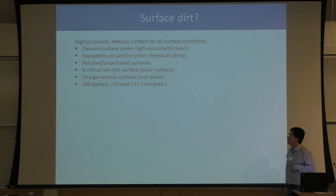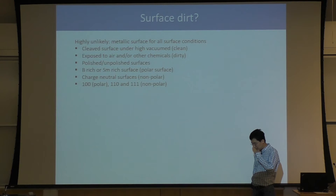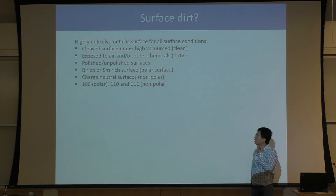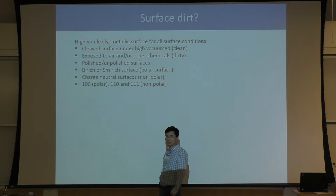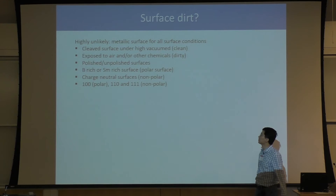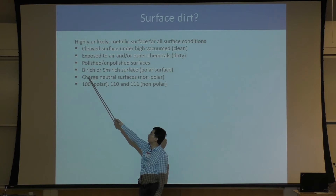In the last couple of minutes, let's think carefully: can this surface conductivity come from something else? For example, from some dirt on the surface or some accidental surface state? This is very unlikely. In the last several decades, people studied many different surface conditions — very clean surfaces in high vacuum freshly cleaved, very dirty surfaces exposed to air and other chemicals, polished and unpolished, samarium-rich, boron-rich, charged, neutral, 100, 110, 111 — and for all surface conditions, the surface is always a metal.